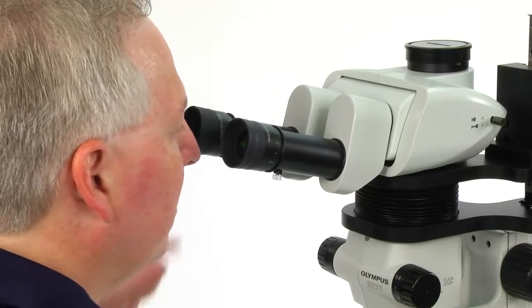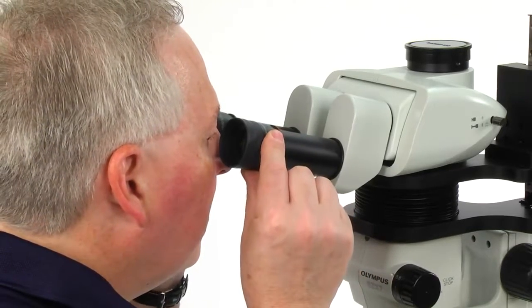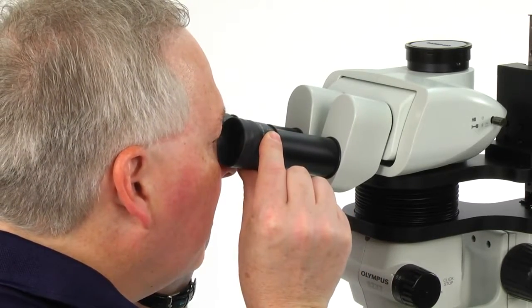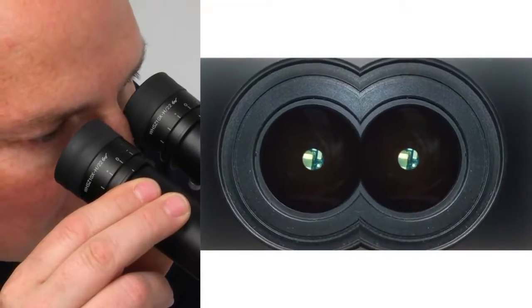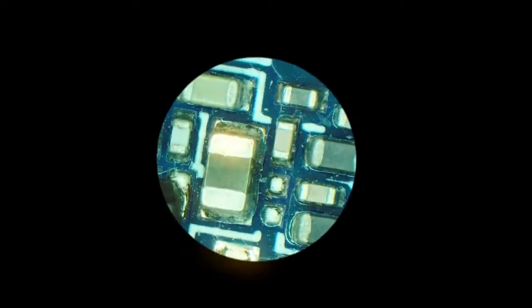While holding the left and right observation tubes with both hands, look through the eyepieces. Adjust for binocular vision by moving the eyepieces together or apart until the left and right fields of view merge to form a single image.